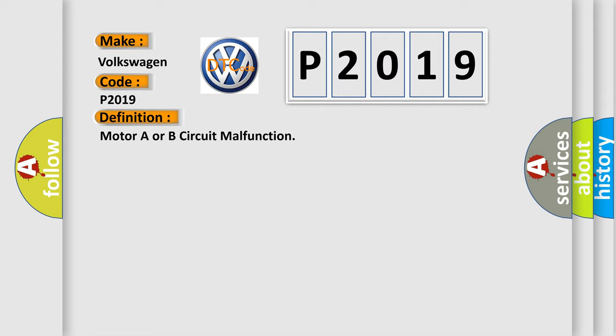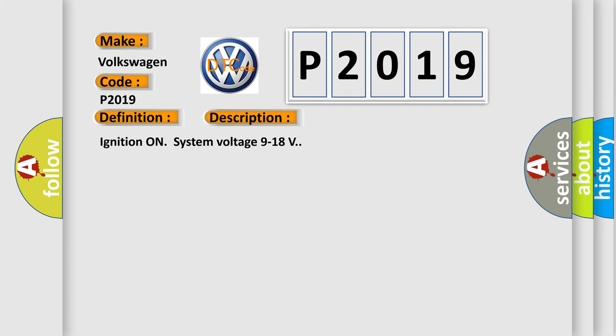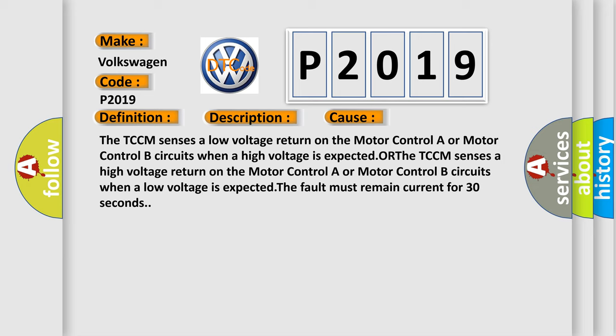Here is a short description of this DTC code. Ignition on, system voltage 9 to 18 volts. This diagnostic error occurs most often in these cases: the TCCM senses a low voltage return on the motor control A or motor control B circuits when a high voltage is expected, or the TCCM senses a high voltage return on the motor control A or motor control B circuits when a low voltage is expected. The fault must remain current for 30 seconds.